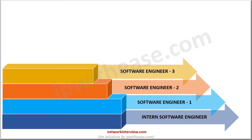The next step in the ladder is Software Engineer 3. It is a senior position where you will gain deep knowledge about the software development process and enough experience. In some branches, this category is used as an alternative for the Senior Software Engineer. The average annual salary of Software Engineer 3 at Juniper is 20–35 lakhs INR.